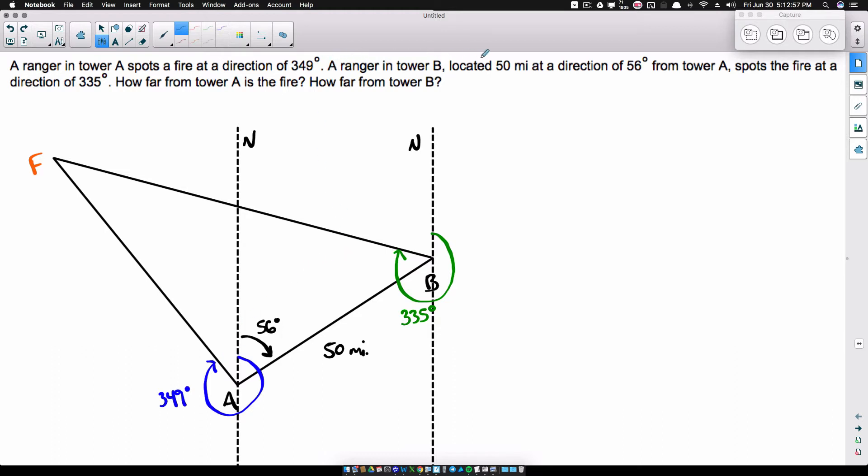A ranger in tower B located 50 miles at a direction of 56 degrees from tower A. Notice this, 56 degrees from tower A. So from tower A to tower B, the direction to tower B from A is 56 degrees. So again, we start north, we go clockwise 56 degrees. So that's why B is over here to the right. Because 56 degrees, think of it as going slightly clockwise. So that's how we're getting this angle right here. But that's just this angle from here to here. Notice they are 50 miles apart as indicated in the problem.